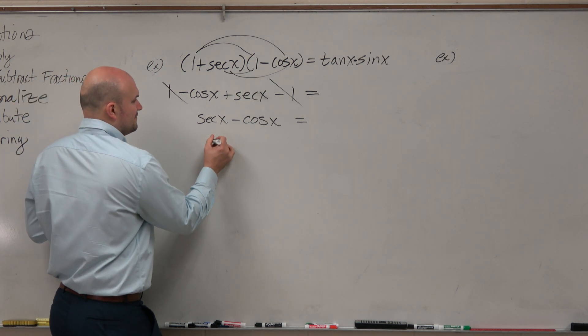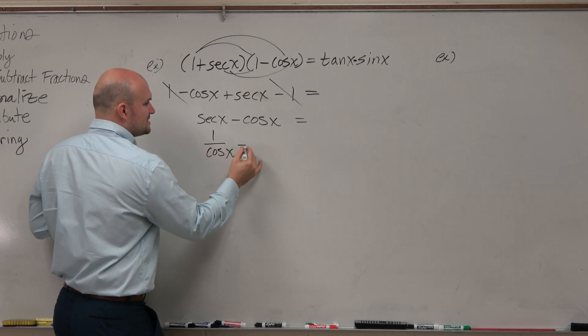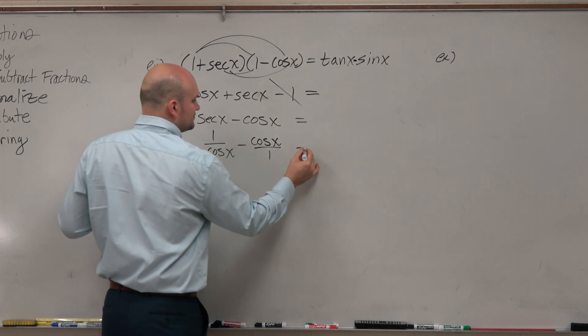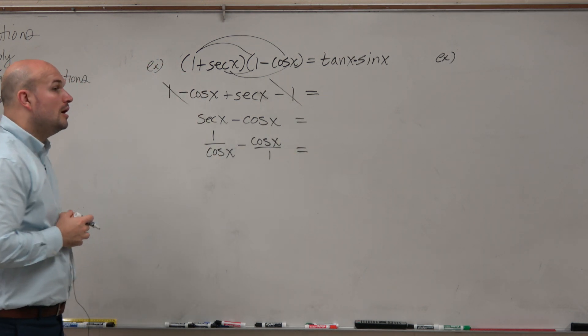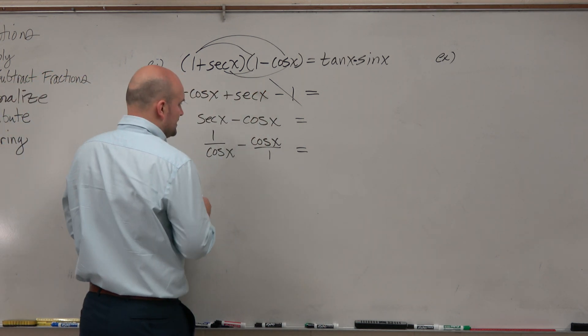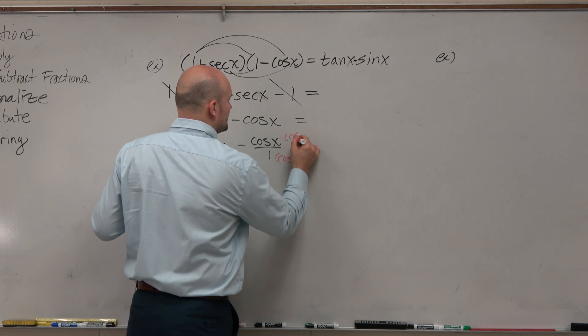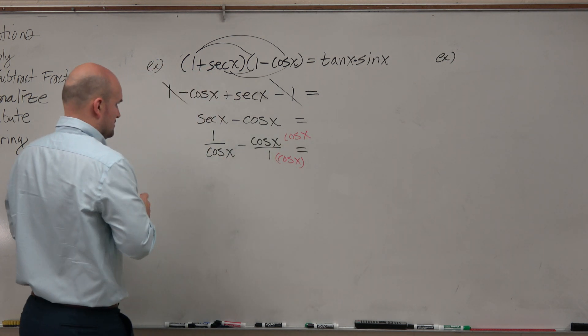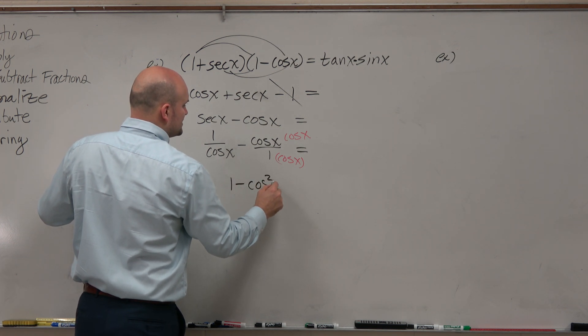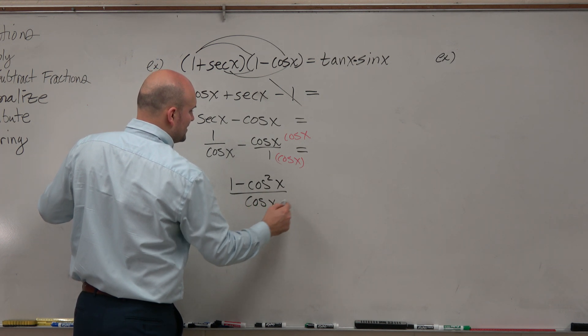So if I rewrite this in terms of sines and cosines, I get 1 over cosine of x minus cosine of x, and let's just put this over 1. Well, I can subtract those now, because now all I need to do is get common denominators. So I multiply by cosine of x over cosine of x. In the numerator now, I have 1 minus cosine squared of x all over my common denominator of cosine of x.